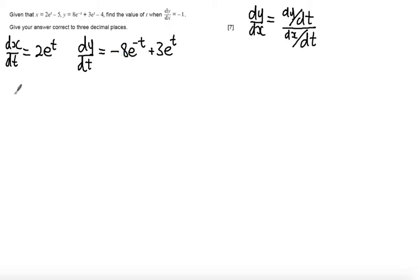Differentiate the constant minus 4, it simply disappears. So when I find dy by dx, I get 3e to the t minus 8e to the minus t, so that's dy by dt over dx by dt, equal to 2e to the t.